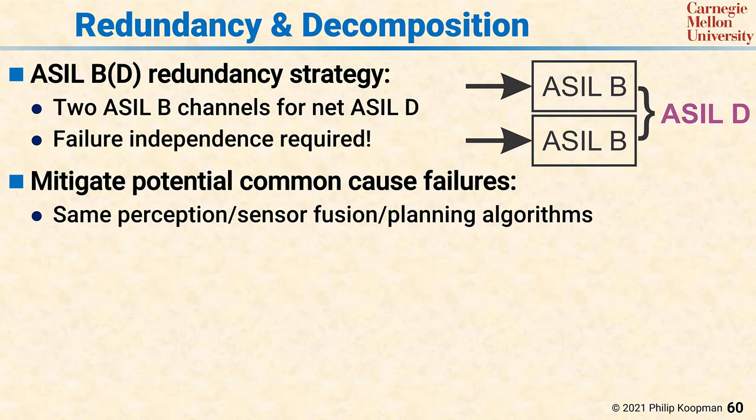Relevant common cause failure sources include using the same perception, sensor fusion, or planning algorithms on both channels. The reason for this is that if, for example, a sensor fusion algorithm has problems with one class of objects being identified or predicted correctly, that same flaw will show up on both channels if both channels use the same sensor fusion algorithm.